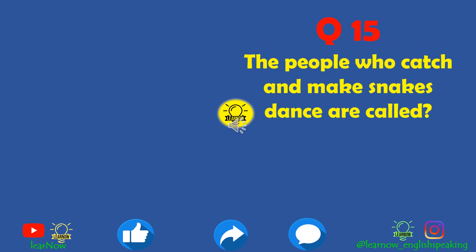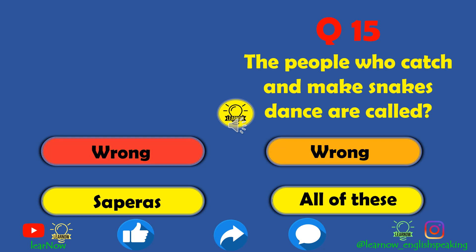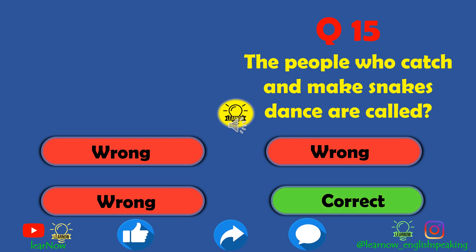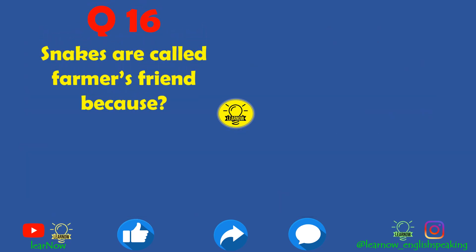Question number fifteen: the people who catch and make snakes dance are called what? The options are Kalvelias, snake charmers, or saperas. All of these is the correct answer — the people who catch snakes and make them dance are called Kalvelias, snake charmers, or saperas.